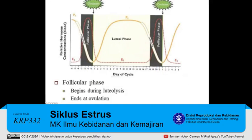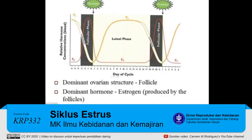The follicular phase begins during luteolysis and ends at ovulation. During the follicular phase, follicles are growing and developing. As follicles grow, they secrete estrogen. Hence, estrogen is considered to be the dominant hormone during the follicular phase of the estrus cycle. The dominant ovarian structure during the follicular phase is the follicle.